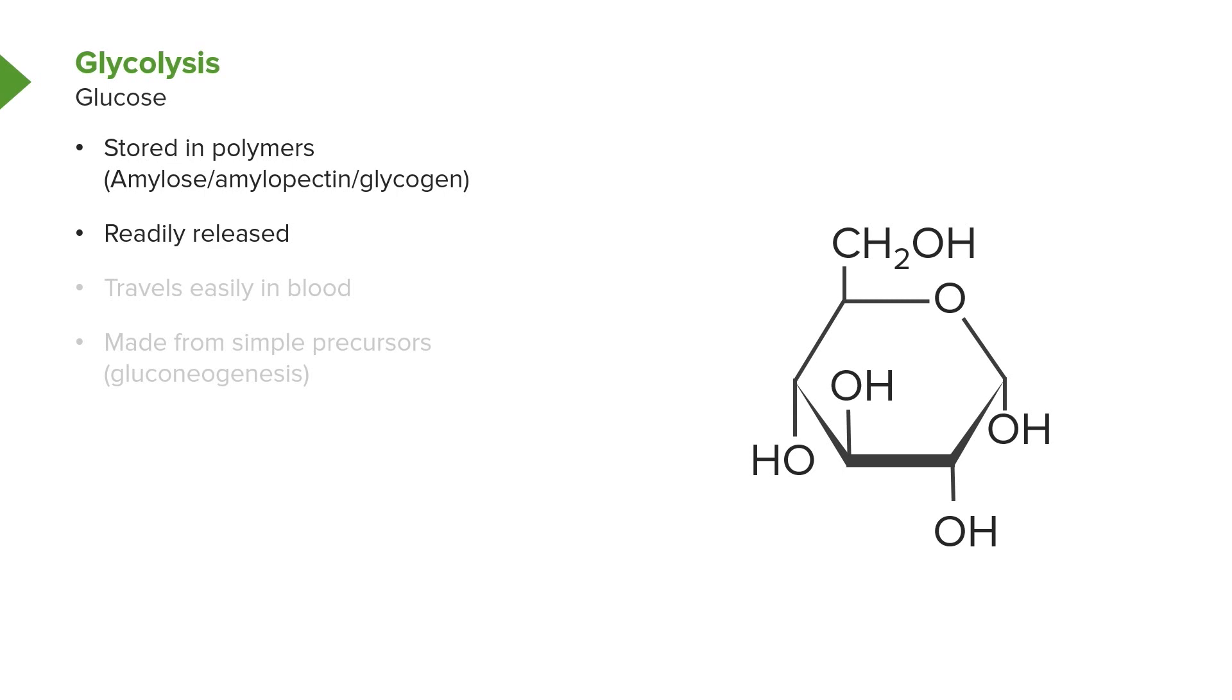The advantage of having glucose as a primary energy source for cells, particularly for a multicellular organism, is that it is readily released from storage and it also travels easily in the blood. Traveling in the blood is important because fat actually stores more energy per carbon than glucose does.